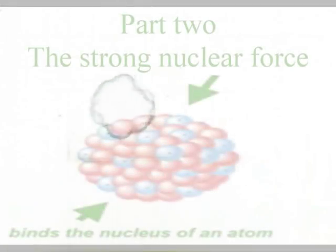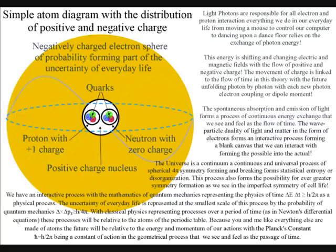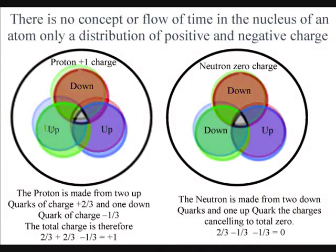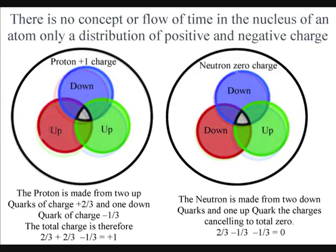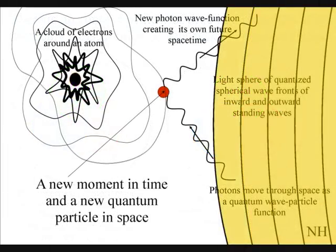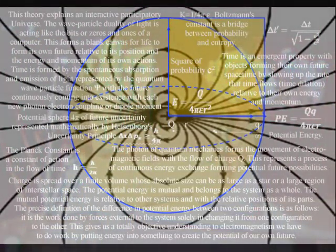For the electromagnetic force to form what we measure as a period of time relative to the atoms of the periodic table, we need another fundamental force — the strong nuclear force or interaction. The strong nuclear force holds matter together, being a short-range force that only works inside the atomic nucleus. In other theories it can seem puzzling that there is no concept or flow of time in the subatomic world governed by the strong nuclear force, but in this theory nothing could be more logical, because the future is unfolding with each new photon-electron coupling or dipole moment in an interactive process outside the atomic nucleus, relative to the electromagnetic force.